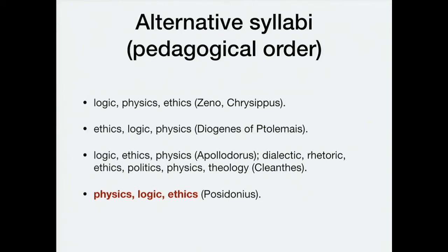One interesting thing about Stoics — related to the development of the school over a long period — is that they had different conceptions about the order in which the parts of philosophy should be taught. The founder Zeno and Chrysippus, the most important developer of Stoicism as a systematic scientific philosophy, thought that the proper order was to study logic first, then physics, then ethics. Perhaps the idea being: if you can't reason because you haven't studied logic, how are you going to reason about physics or ethics?